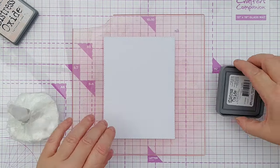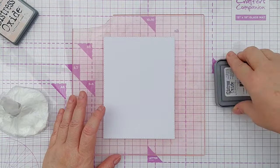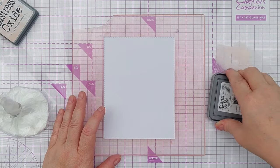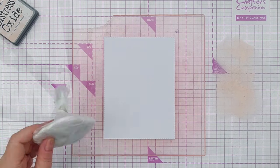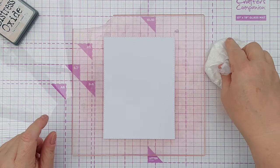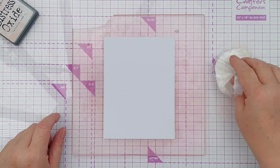To start with I popped my panel on my grip mat and then smushed some tattered rose distress oxide onto my glass mat, spritzed it with water and then picked it up with my smusher.